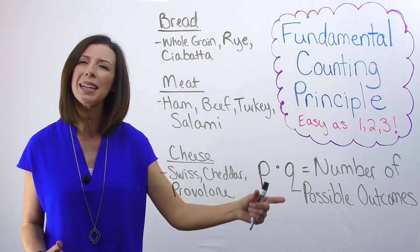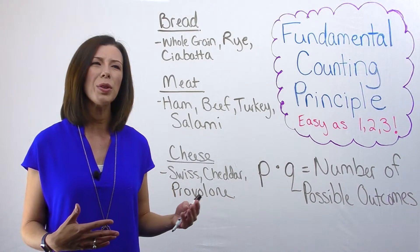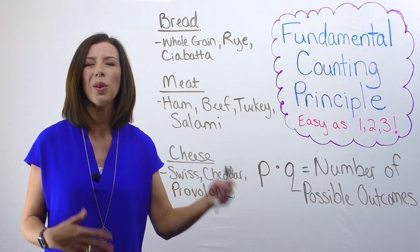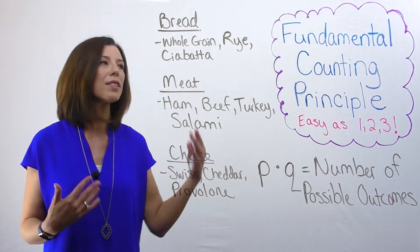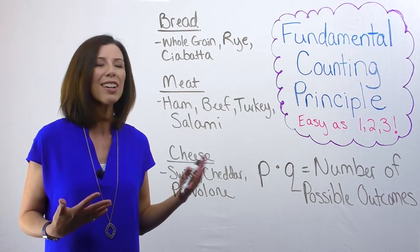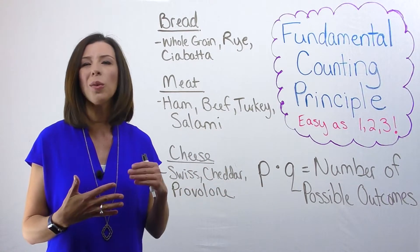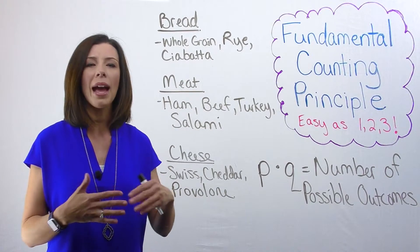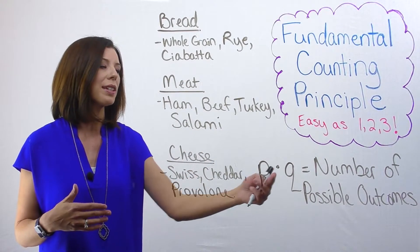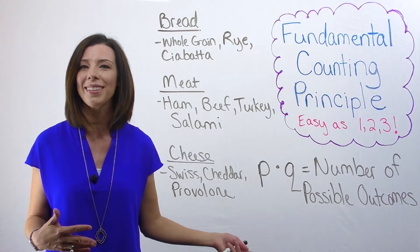Now you might be thinking, I only see a P and a Q here — so what do I do if I have more than a P and Q? Well, likewise, the fundamental counting principle says it actually doesn't matter. P, Q, L, M, N — we could continue. The moral of the story is that we're always going to be multiplying them.